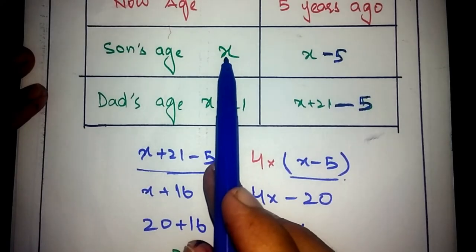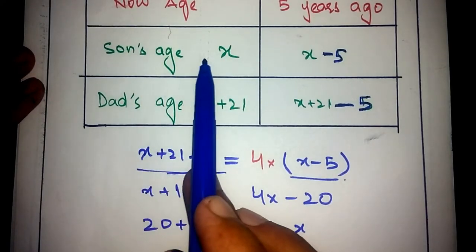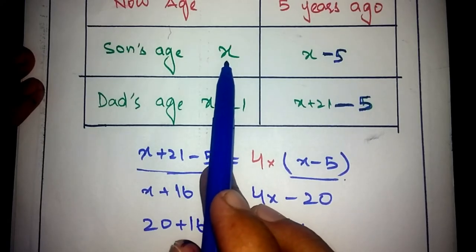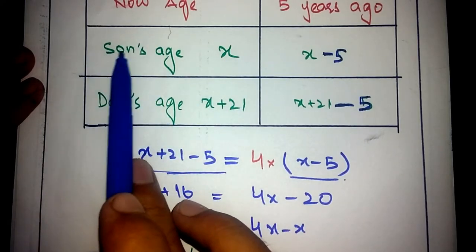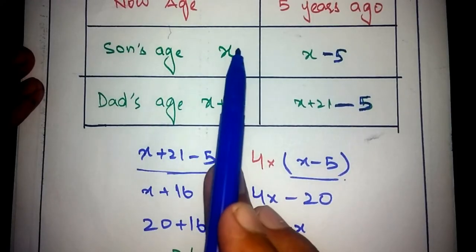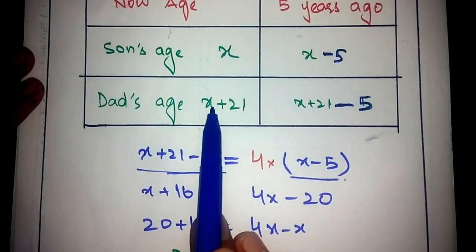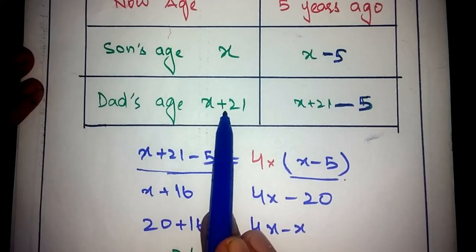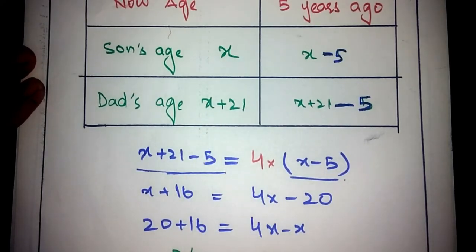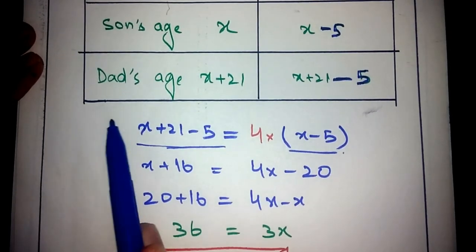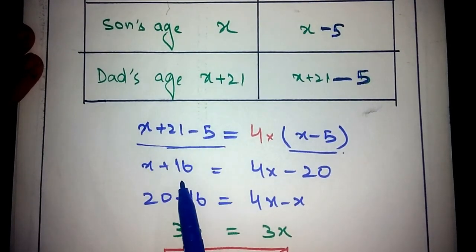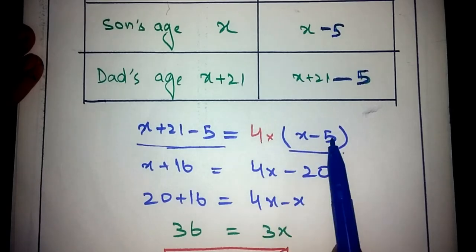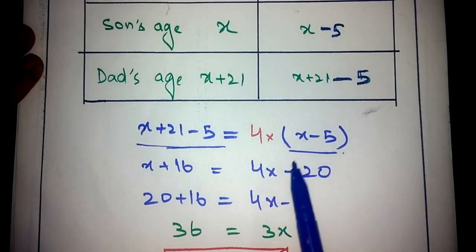X is the present age of the son, so finding X gives us the son's present age. We can then find the dad's present age by substituting X. Simplifying: 21 minus 5 is 16, so we get X plus 16 equals 4X minus 20.